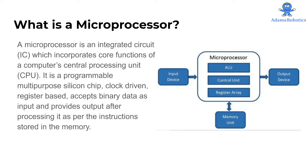What is a microprocessor? A microprocessor is an integrated circuit, IC, chip which incorporates core functions of a computer's central processing unit, that is known as CPU. It is a programmable, multipurpose silicon chip, clock driven, register based, accepts binary data as input and provides output after processing it as per the instructions stored in the memory.